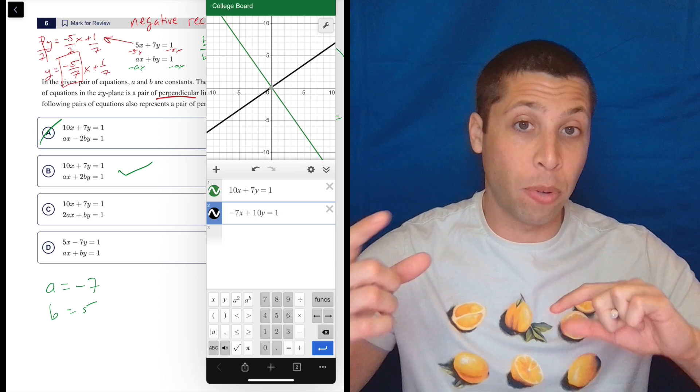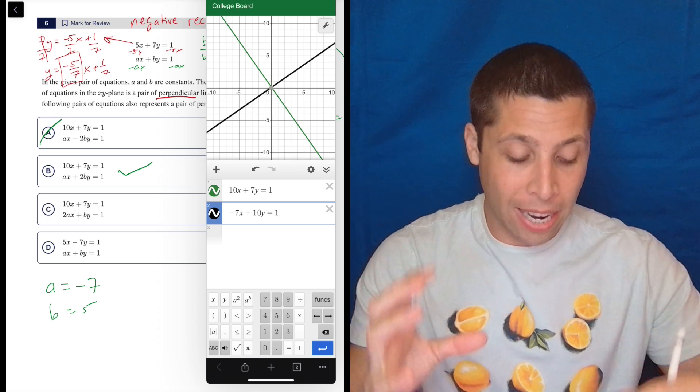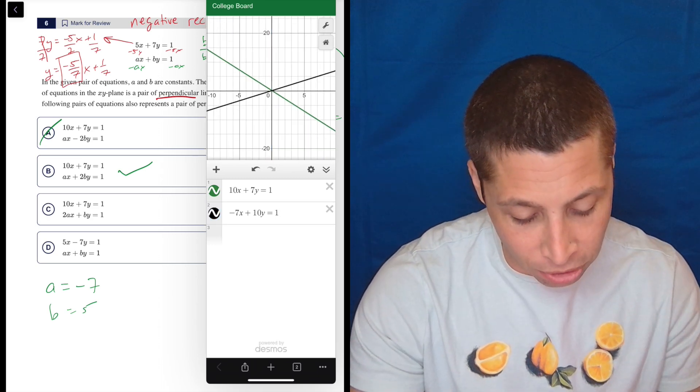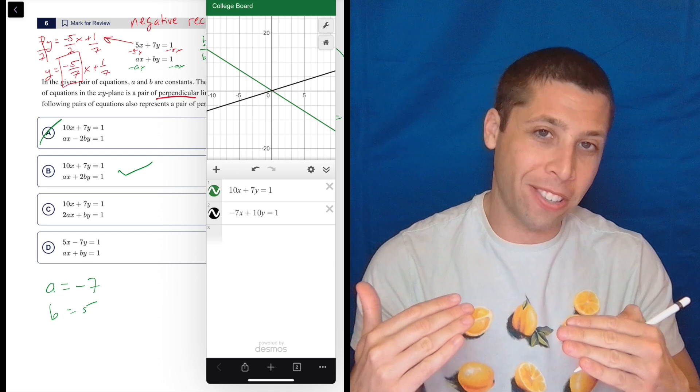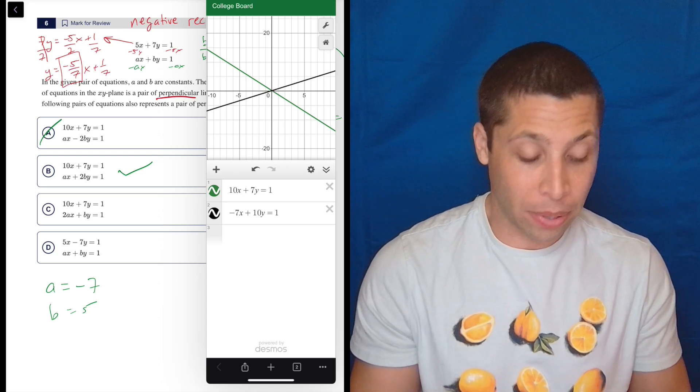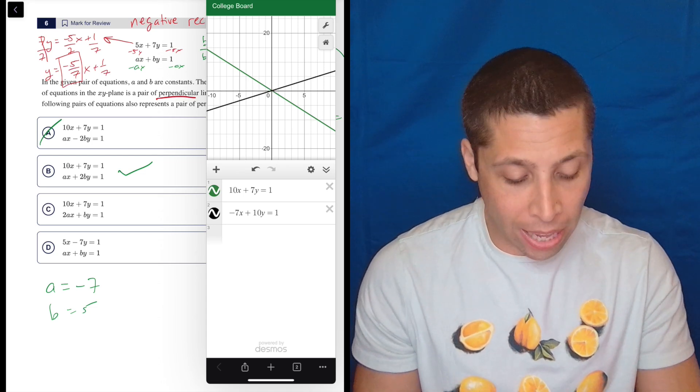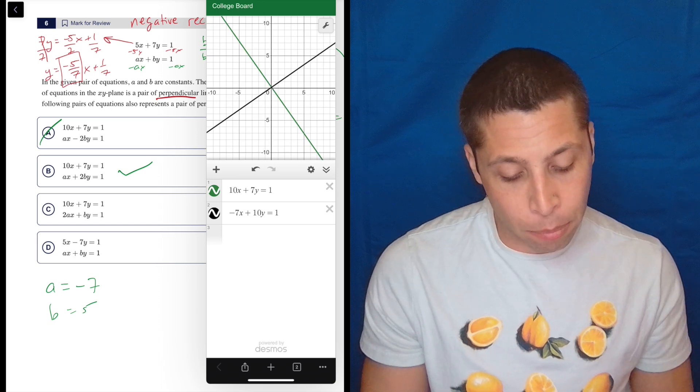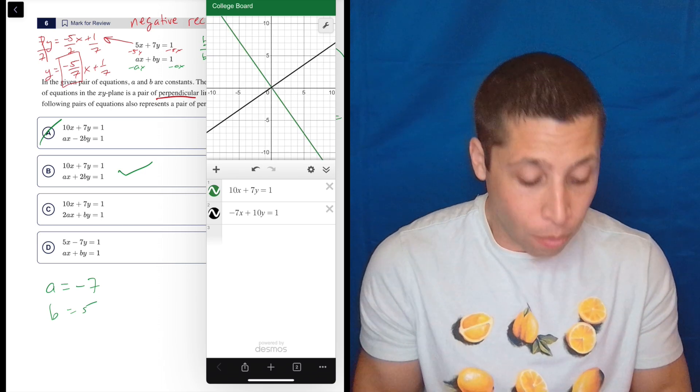The only thing I worry about for you guys is sometimes when you play with Desmos and you start kind of zooming in and out, you smush. See, look, if I change the scaling, then I end up with something that doesn't look perpendicular, even though it is. The way to fix that is always to hit that home button in the top right, and that's going to bring you back to a square grid. So it is perpendicular.